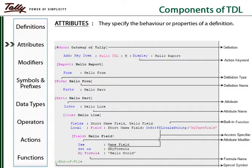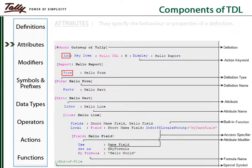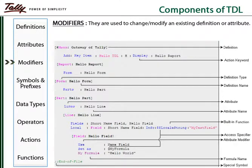Each definition is followed by a set of attributes. Modifiers are used to modify the existing definition or attribute. For example, the modifier 'use' helps the programmer to reuse a previous definition.